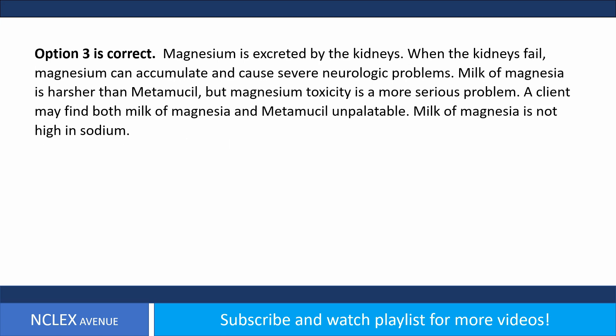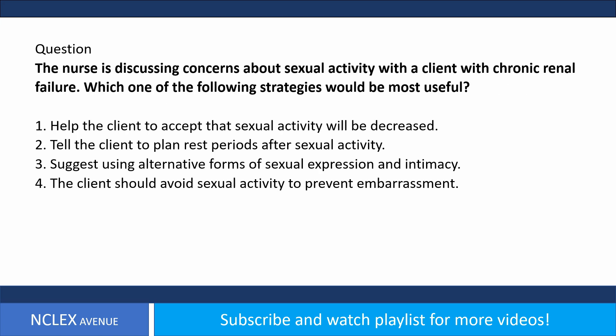Answer: option three is correct. Magnesium is excreted by the kidneys; when the kidneys fail, magnesium can accumulate and cause severe neurologic problems. Milk of magnesia is harsher than Metamucil, but magnesium toxicity is a more serious problem. A client may find both milk of magnesia and Metamucil unpalatable. Milk of magnesia is not high in sodium.